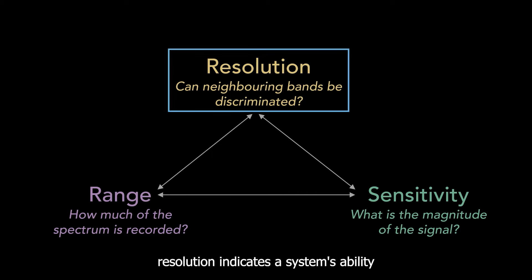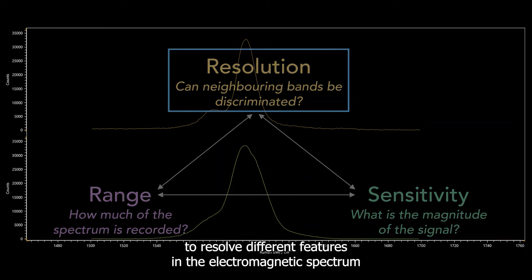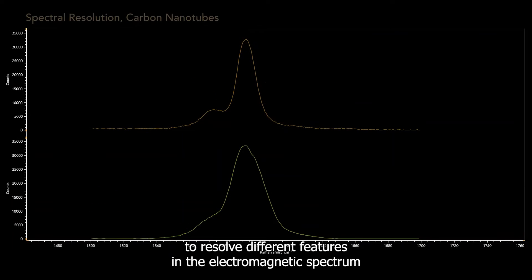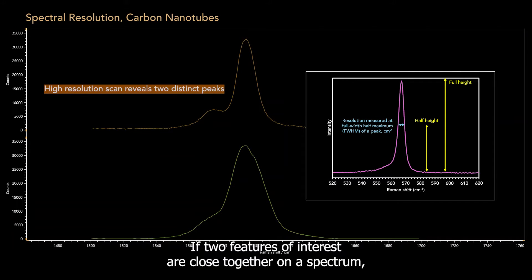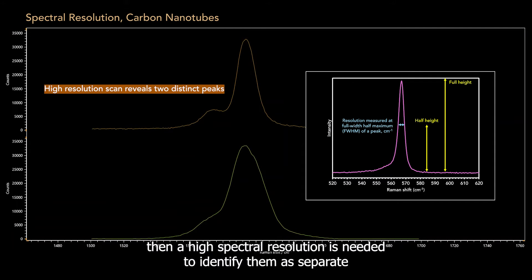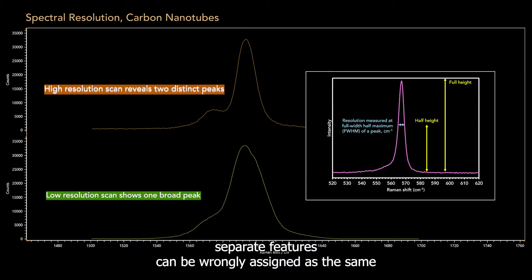Resolution indicates a system's ability to resolve different features in the electromagnetic spectrum. If two features of interest are close together in a spectrum, then a high spectral resolution is needed to identify them as separate. If the resolution is not sufficiently high, separate features can be wrongly assigned as the same.